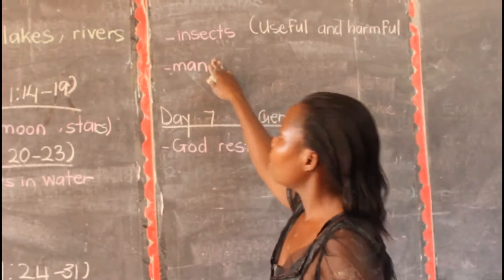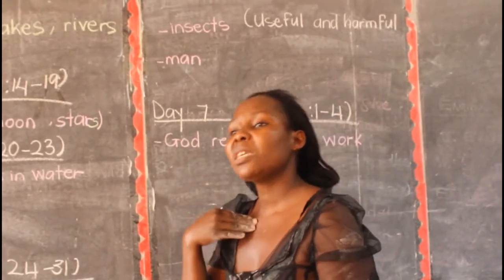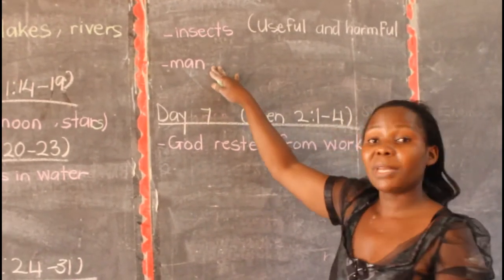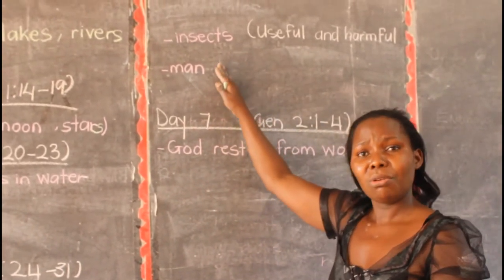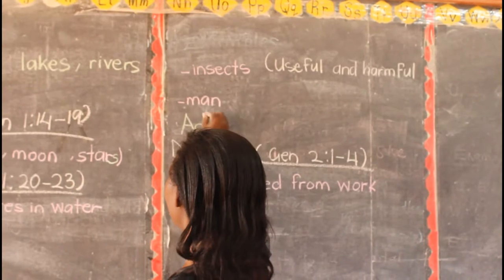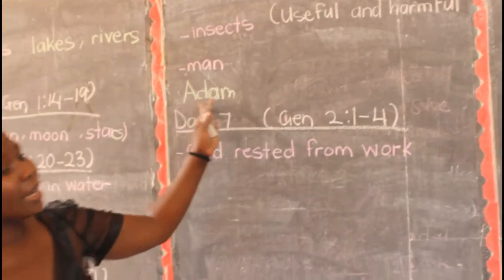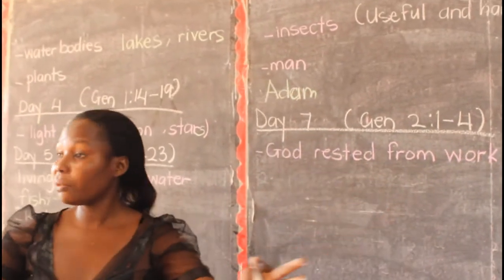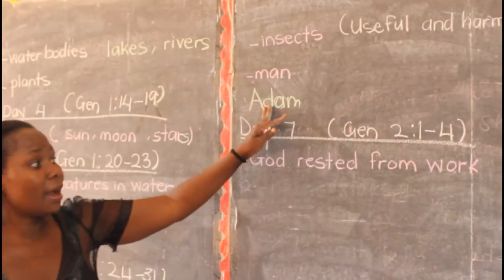On that sixth day, God also made man — me and you, your parents. God made us on the sixth day, and man was the last thing God created. Who was the first person to be created by God? Adam. Adam was the first man God created. God created Adam and put him in the garden, with the plants, the animals, and all those good things.